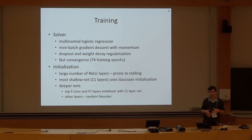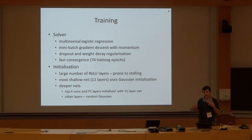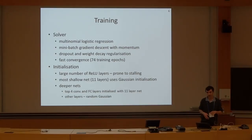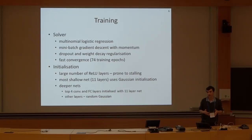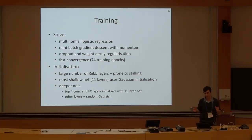One important problem in training these very deep convolutional networks is the initialization of the network, because if you just initialize randomly, the training can struggle. We found that for the 11-weight-layer network, random initialization still works fine. But for deeper networks, there could be issues. To circumvent this, we took the 11-weight-layer network and used its first four convolutional layers and fully connected layers to initialize the corresponding layers of the deeper networks. The remaining intermediate layers were initialized randomly, but we used the same learning rate across all layers so the weights were still free to change during training.